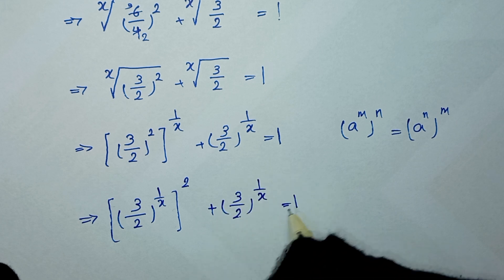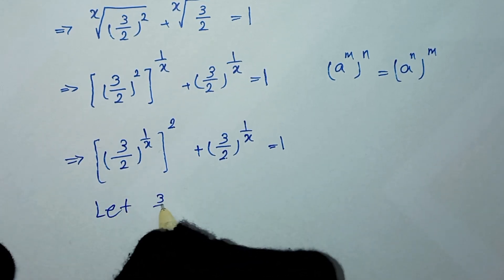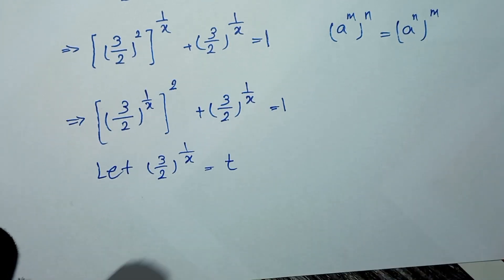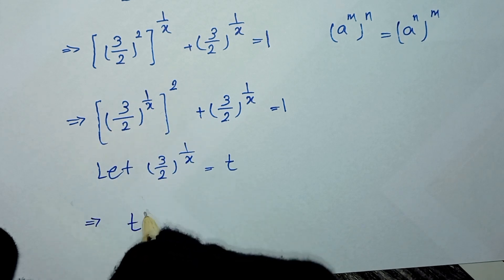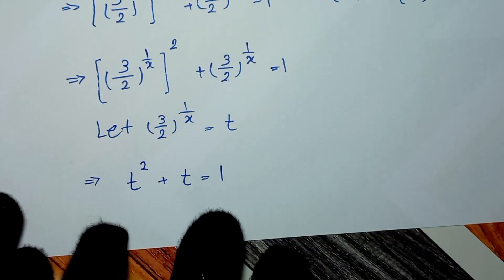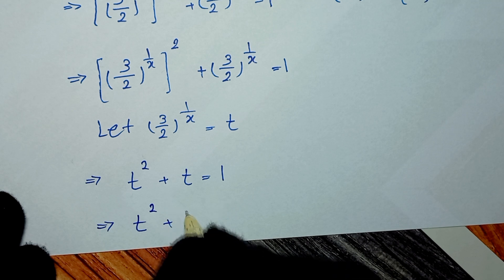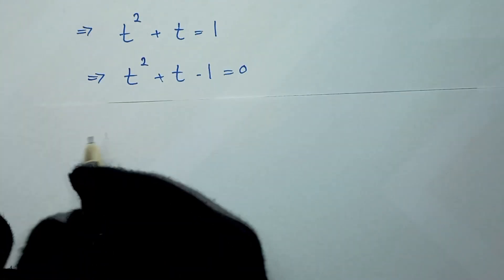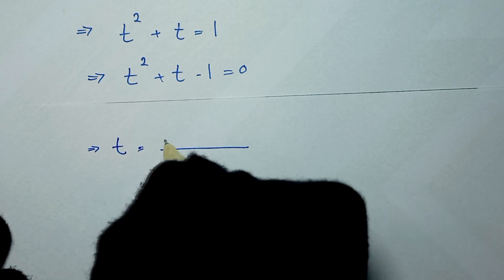This equals 1. Next, we let (3/2) to the power of 1/x equal t. So this becomes t² plus t is equal to 1. Taking 1 to the other side: t² plus t minus 1 equals 0.